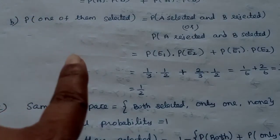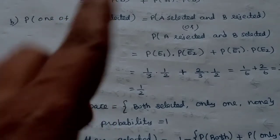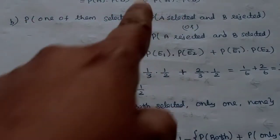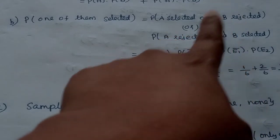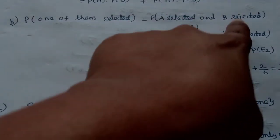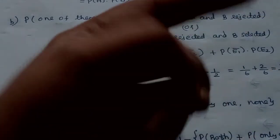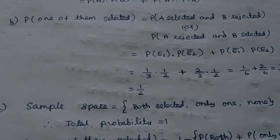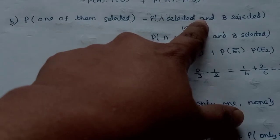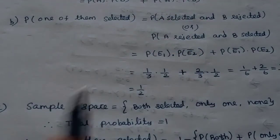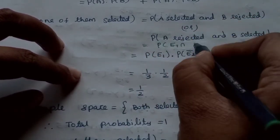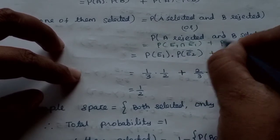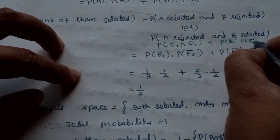For only one of them being selected: the probability is either A selected and B rejected, or A rejected and B selected. So it is the probability of E1 intersection E2 bar, plus the probability of E1 bar intersection E2. Since A and B are independent, E1 and E2 bar are also independent events.